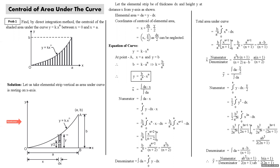The strip can be treated as a rectangle with height y, so its centroid is at y/2 from the x-axis and at x + dx/2 from the y-axis. Since dx/2 is very small it can be neglected. So the coordinates of the centroid of the elemental strip are (x, y/2). The elemental area dA = y dx. The equation of the curve is y = kx^n.